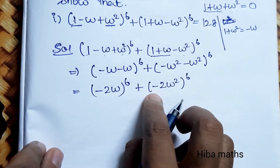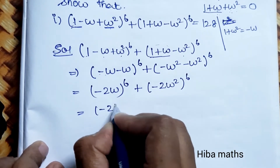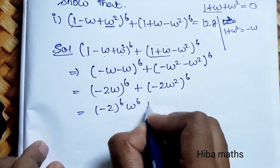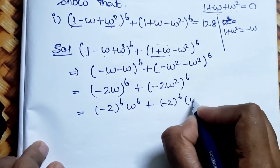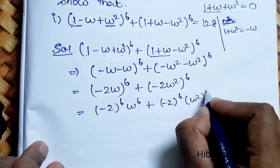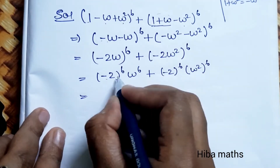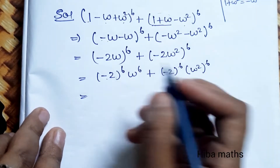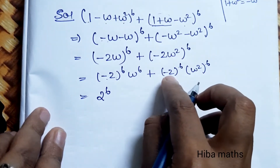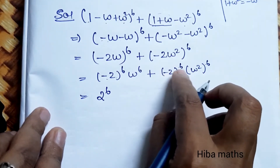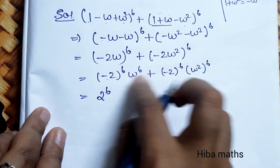Solving further: (-2)^6 · ω^6 + (-2)^6 · (ω²)^6. Since (-2)^6 is positive, we get 2^6 · ω^6 + 2^6 · ω^12. We can factor out 2^6, giving 2^6(ω^6 + ω^12).